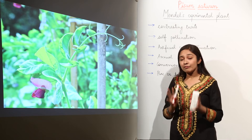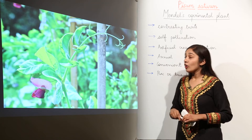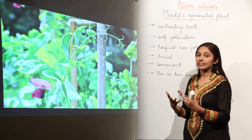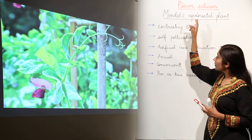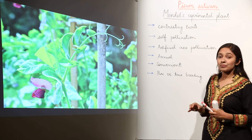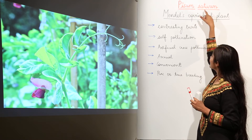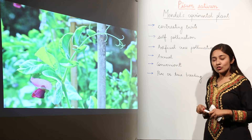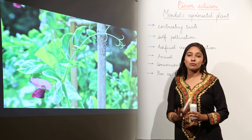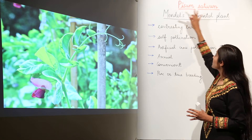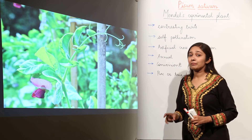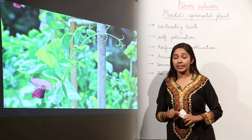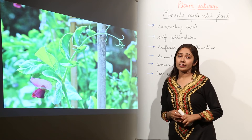Remember, whenever you write a scientific name, the genus name — the first name — should always begin with an uppercase or capital letter, and whenever you write the species name, it should always start with a lowercase or small letter. So don't forget the scientific name of the garden pea plant, Pisum sativum, because all the experiments done on Pisum sativum have laid down the basic laws of heredity and given us the concepts of heredity.